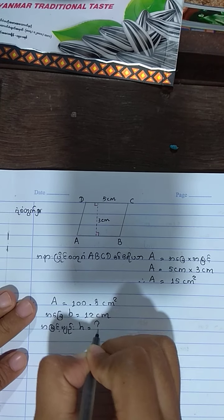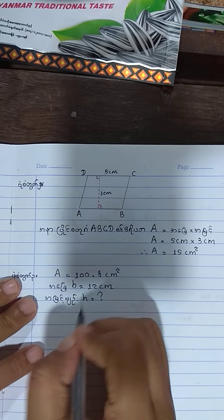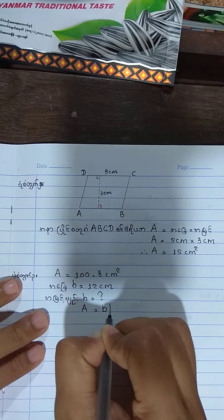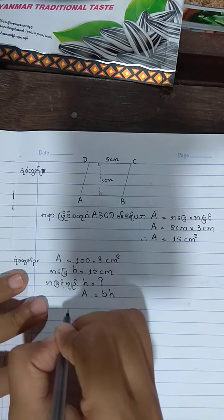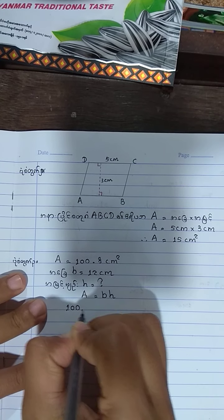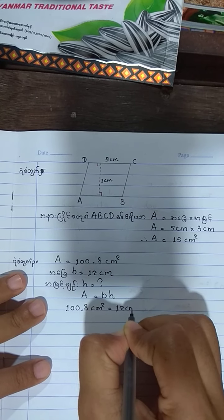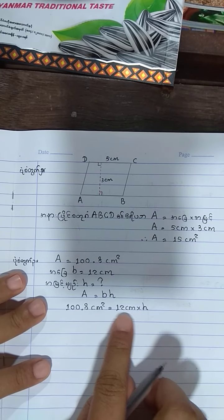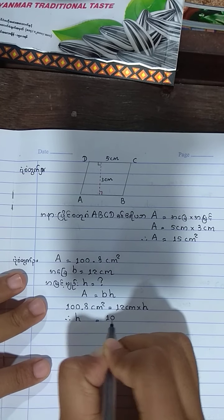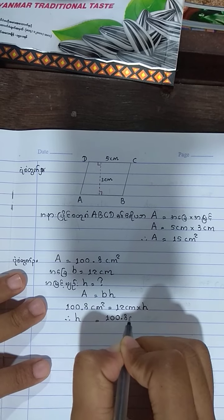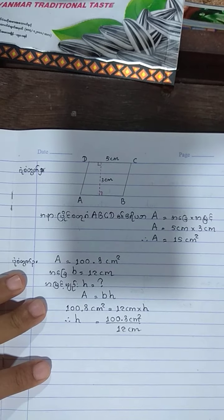Now we will write down A equals to B×H. A equals to B×H. If we write it, we get 14 cm squared by 15 cm squared by 2 cm.